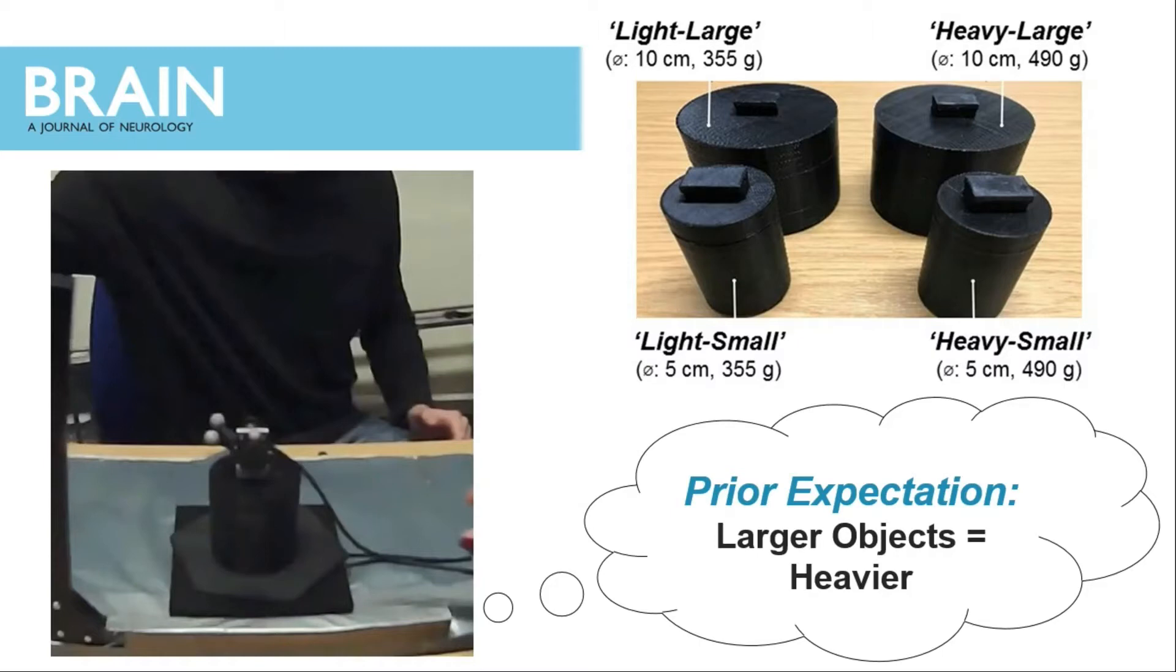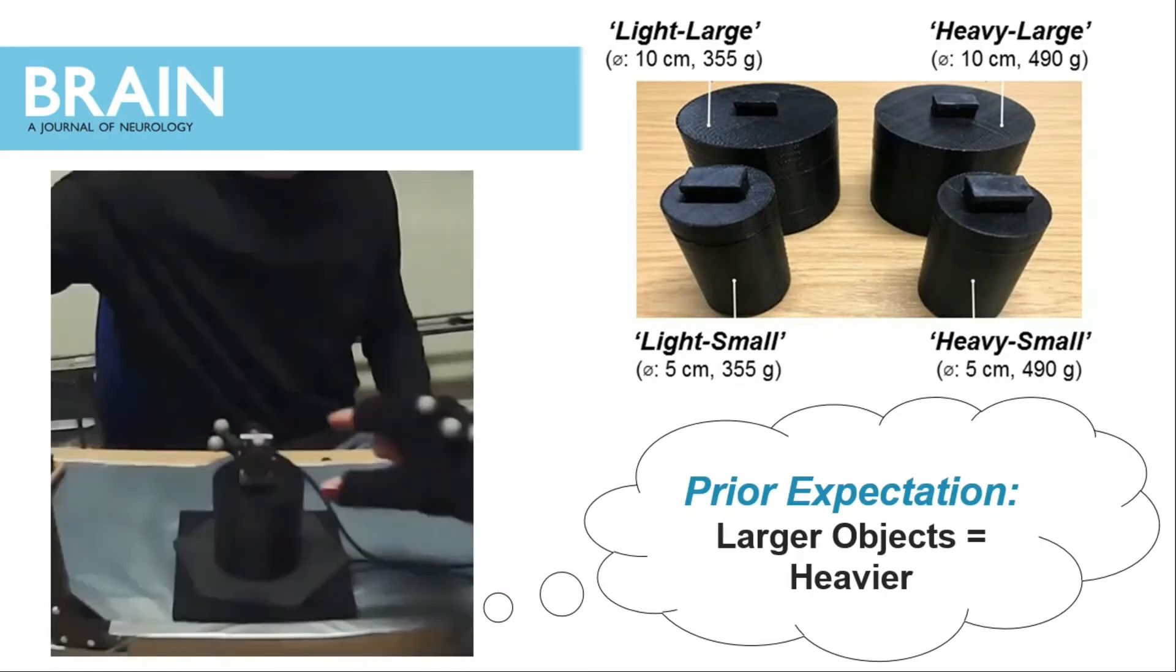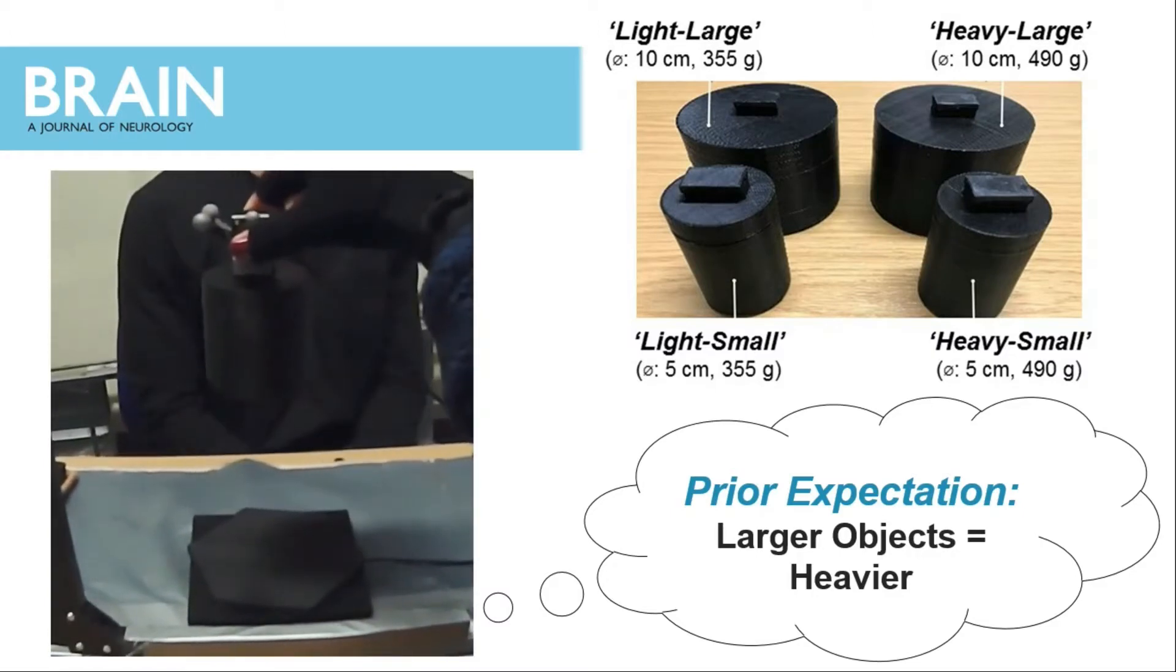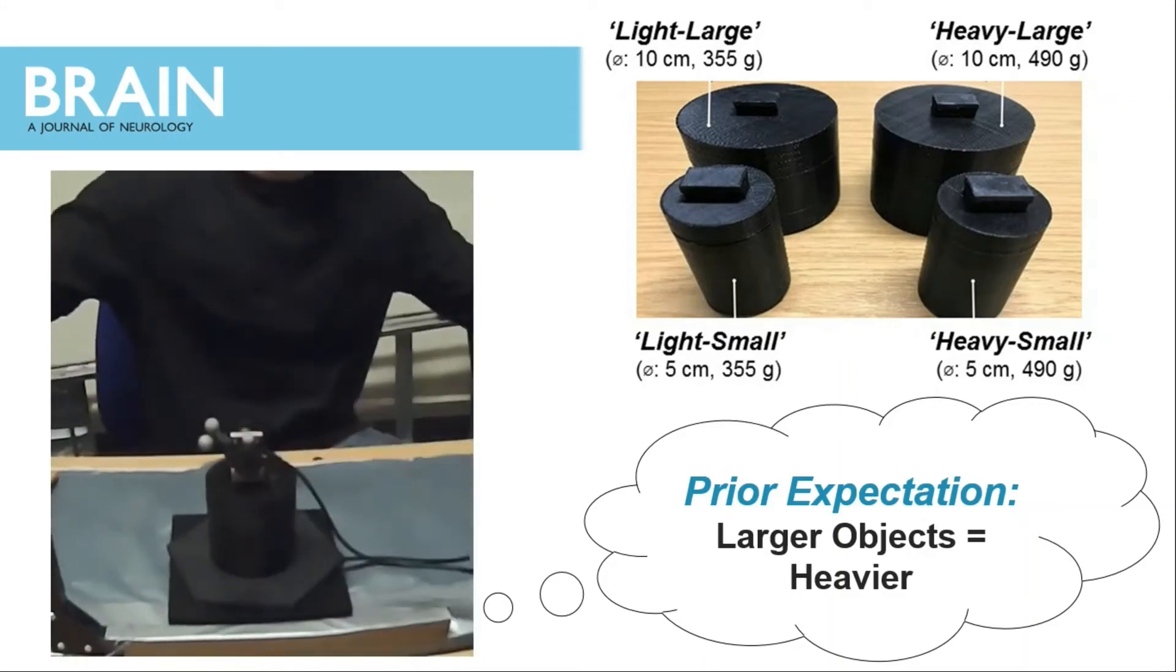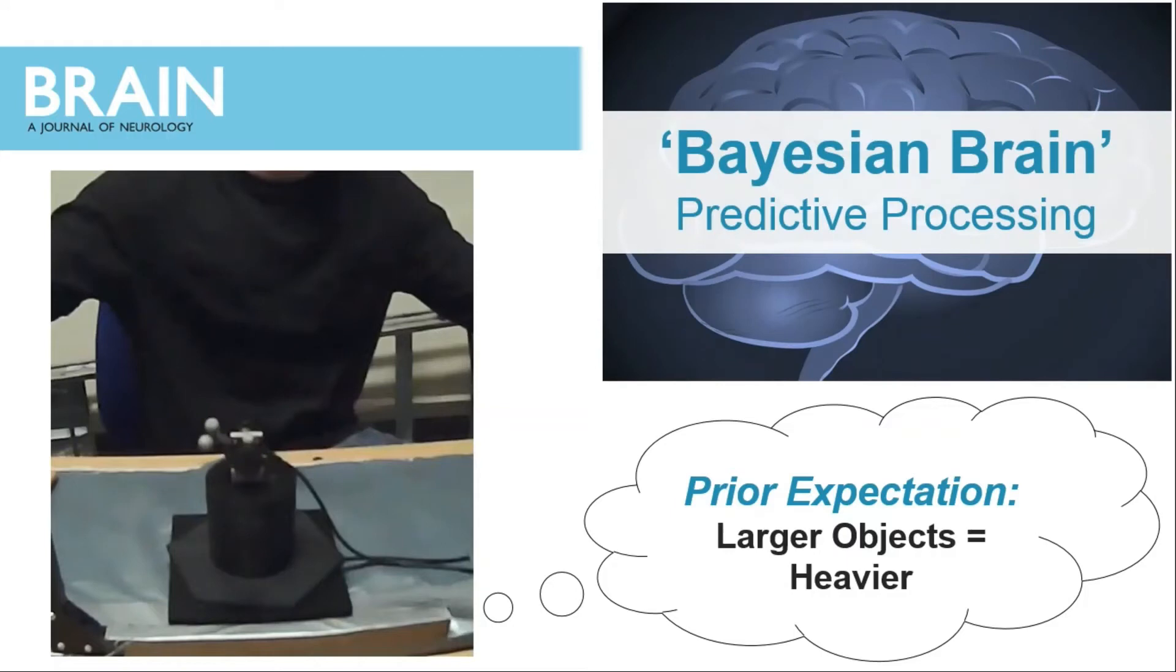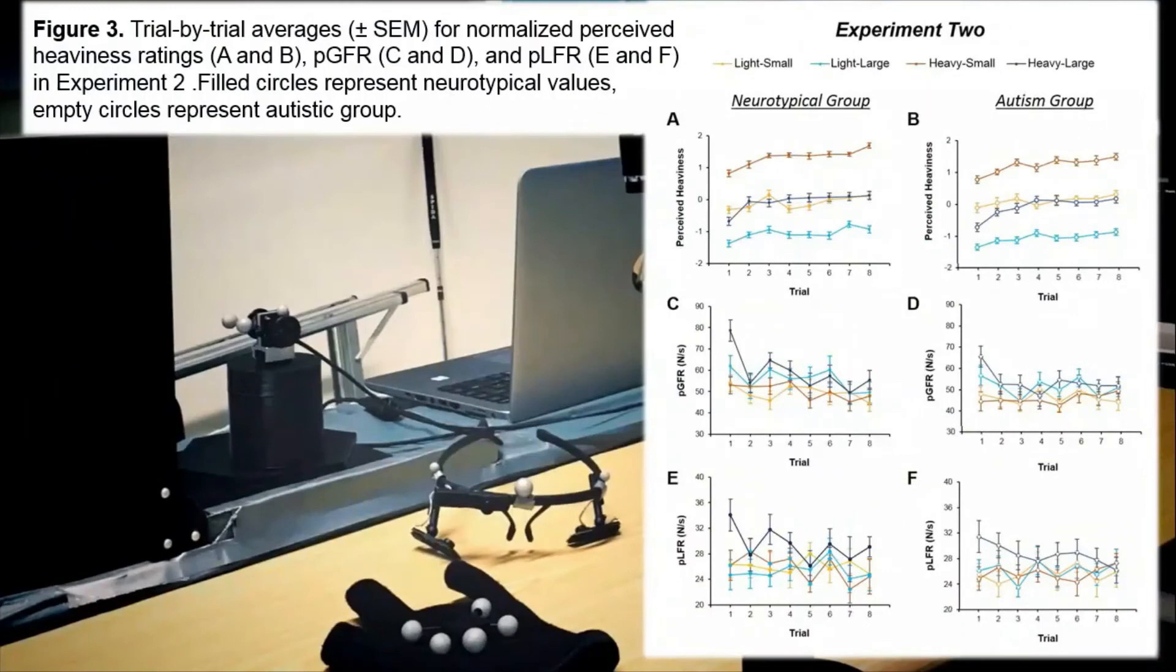This allowed us to isolate the specific role of prior expectations on perception and action. Unsurprisingly, both autistic and non-autistic participants self-reported before the experiment that they expected larger objects to be heavier than smaller objects. What we were then able to do is examine how these prior expectations influence movement and sensory sampling behaviors. According to Bayesian brain perspectives of autism, if prior expectations were attenuated in autistic participants, we would therefore expect there to be reduced influence of these expectations on lifting movements and on sensory sampling behaviors.